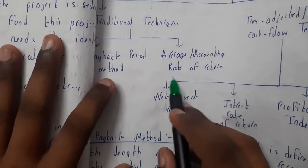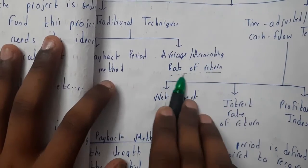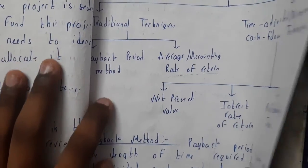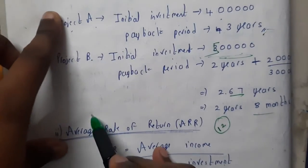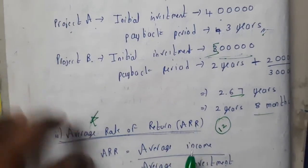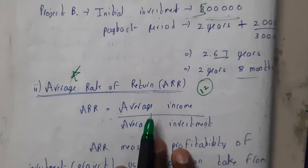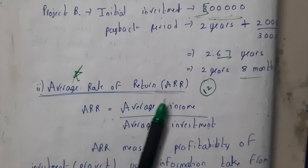In the next lecture we'll go through the second method, which is the Average Rate of Return, popularly called ARR. This is frequently seen in question papers, so please practice it perfectly. Let us meet in the next tutorial — thank you for watching.